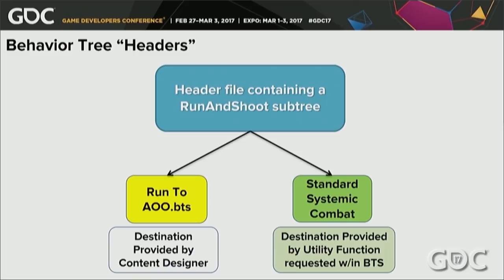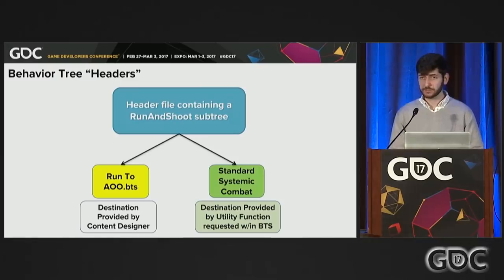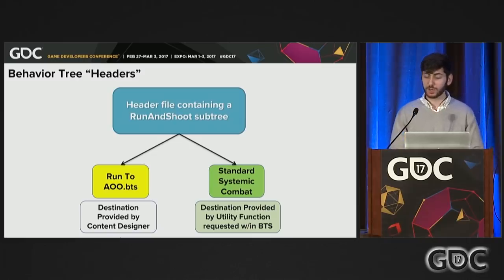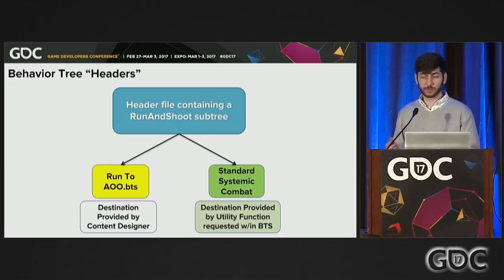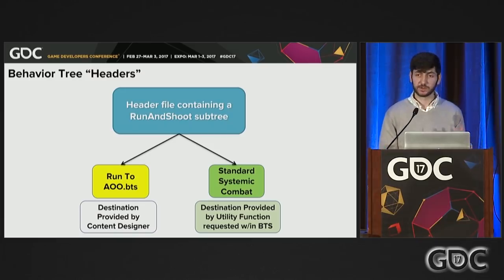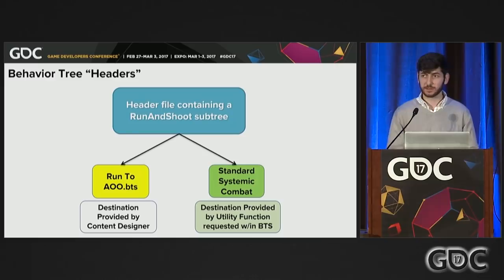Part of the reason working with micro behaviors was so easy and I could keep them lean is because we used a header file system for our behavior trees. Just like you might have a helper function in a header file in code, we had header files for our behavior trees that could hold very frequently used AI sub-trees. For example, a 'run and shoot' sub-tree that handles all the inner workings of how a character fights while running to a point. We include that header file in our main behavior tree for standard systemic combat, and we can also include it in our micro behavior for running to an area of operations — the only difference being the destination is provided by the content designer instead of internally figured out by the AI. As I improve the sub-tree once, all behavior trees using it get that same improvement.